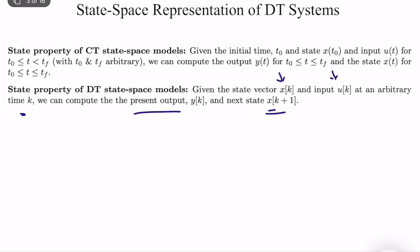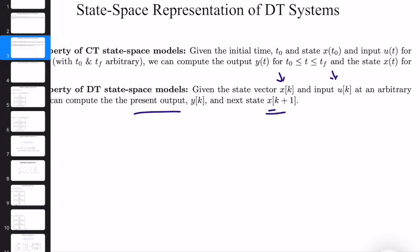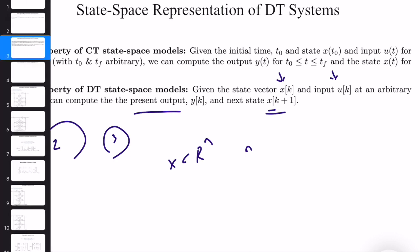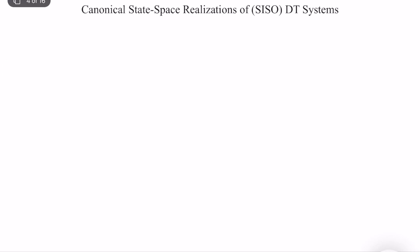A state-space representation is minimal if it includes the minimum number of state variables to satisfy the state definition. If you can satisfy this definition with two states but also three states, the two-state representation is minimal and three is not. If your state vector x(k) has dimension n where n is the minimum possible integer, then it is a minimal representation. If the representation doesn't satisfy the state definition at all, it's not a valid state-space representation.